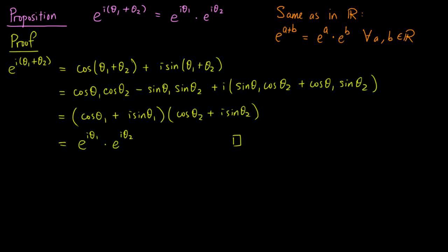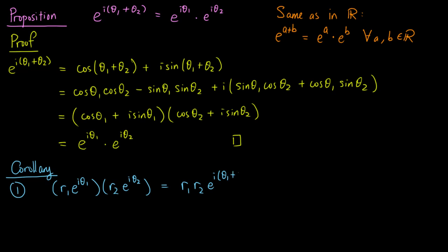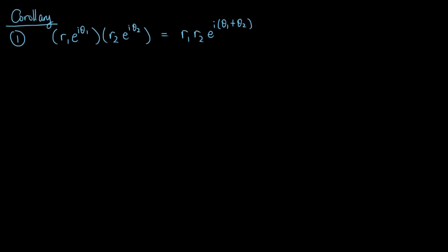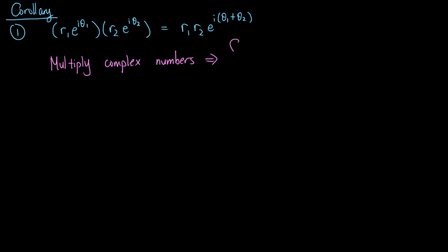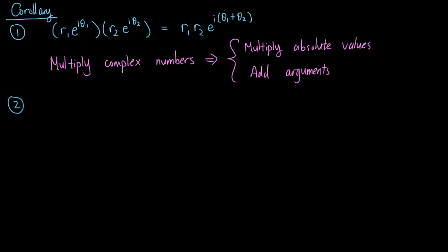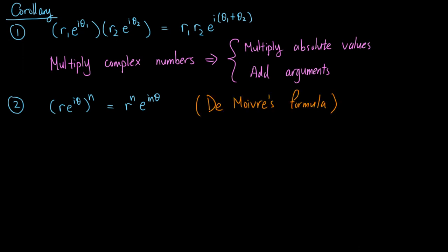This proposition allows us to give a formula for multiplying complex numbers as a corollary. If we multiply r₁ e to the iθ₁ and r₂ e to the iθ₂ together, the product equals r₁r₂ e to the i(θ₁+θ₂). To multiply two complex numbers in polar form, we multiply the absolute values and add the arguments. In particular, raising a complex number to the nth power gives the absolute value to the power n with the argument multiplied by n. This is known as de Moivre's formula.